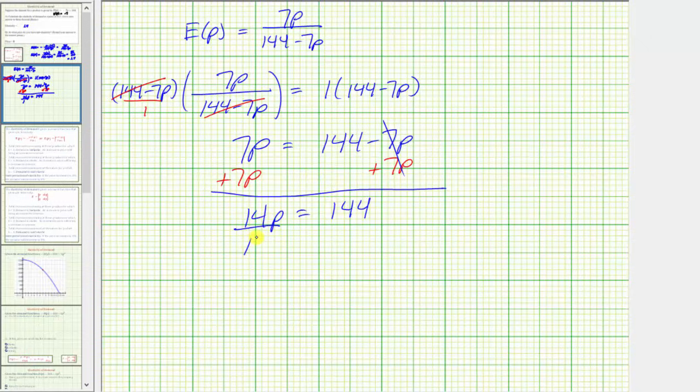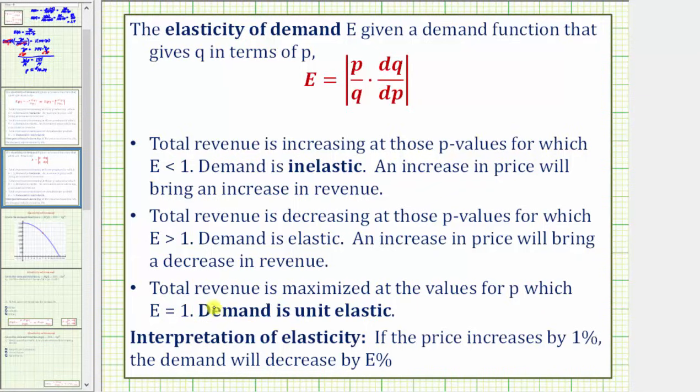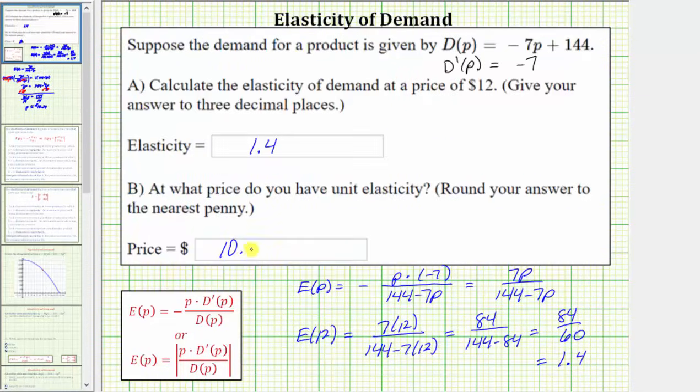So for p, we divide both sides by 14. Simplifying, 14 divided by 14 is one, one times p is p. The price is equal to 144 divided by 14, rounded to the nearest penny is approximately $10.29. So at this price, the total revenue is maximized. I hope you found this helpful.